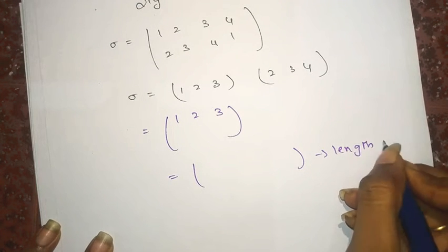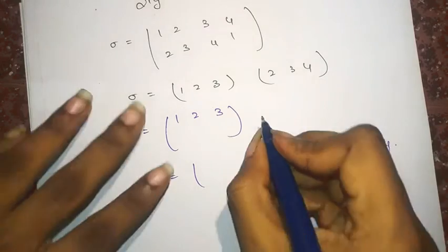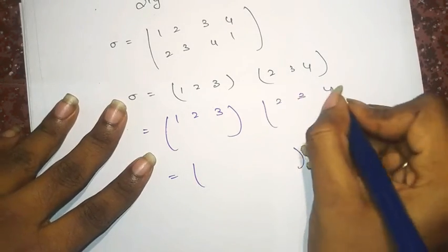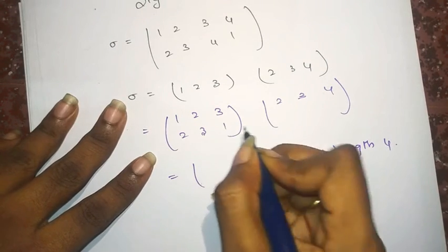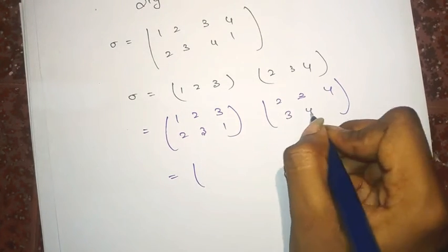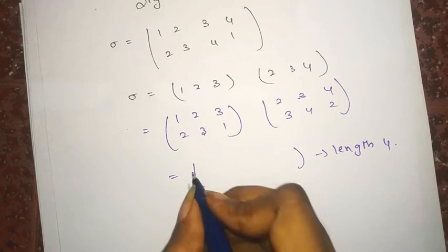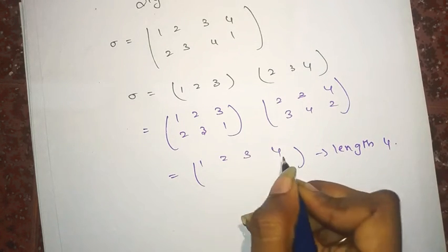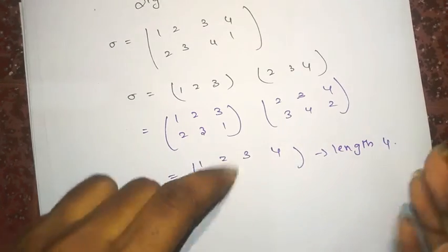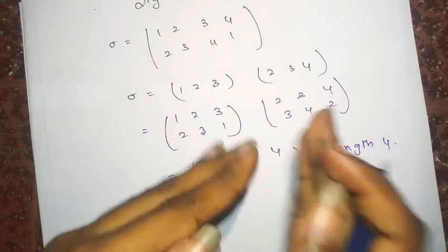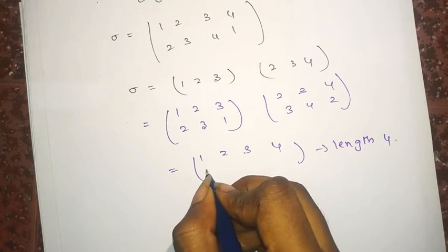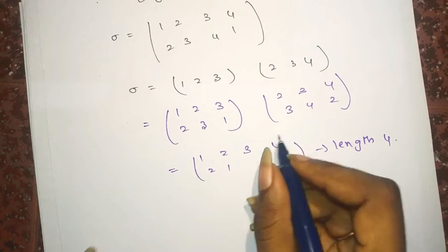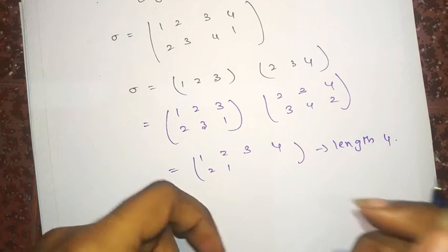So (2 3 4 1) - 1 is mapped to 2, 2 is mapped to 3, and so on. I'm not going to explain the composition here because I have already explained the composition in many of my previous lectures, and I have provided the link in the description box for your better understanding.